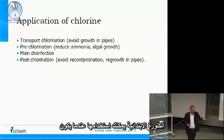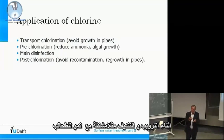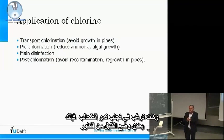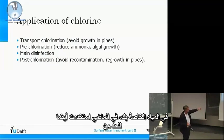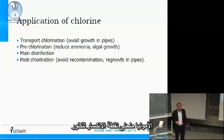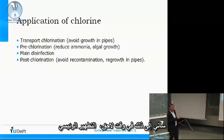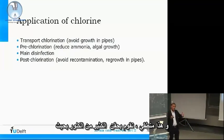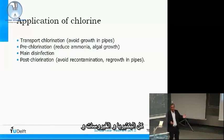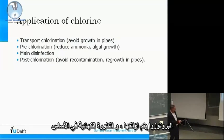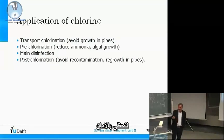Pre-chlorination can be used when, for example, during your coagulation and flocculation system you have problems with algae growth and want to avoid it — you can put a little bit of chlorine in the water. In the past, it was also used to reduce ammonia via breakpoint chlorination. The main disinfection is straightforward: you dose enough chlorine so that all bacteria, viruses, and protozoa are removed. Post-chlorination is mainly to maintain a safety chlorination during distribution.